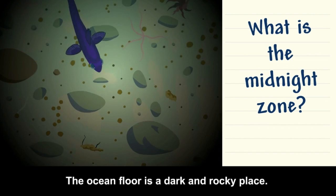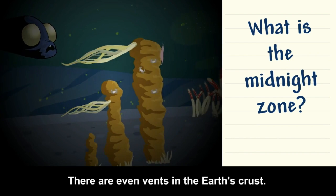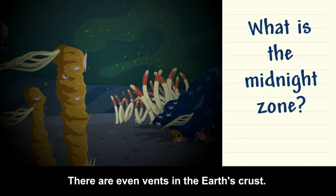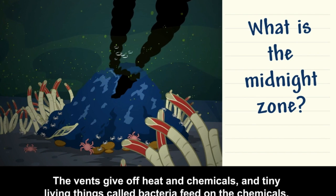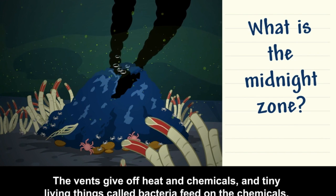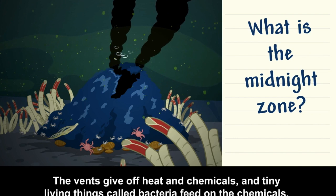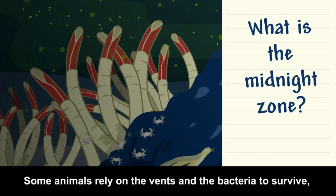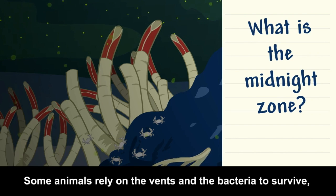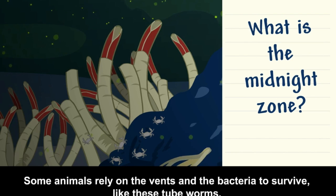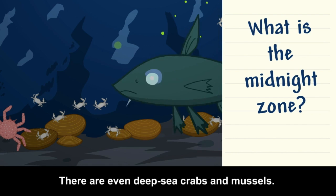The ocean floor is a dark and rocky place. There are even vents in the Earth's crust that give off heat and chemicals, and tiny living things called bacteria feed on the chemicals. Some animals rely on the vents and the bacteria to survive, like tube worms. There are even deep sea crabs and mussels.